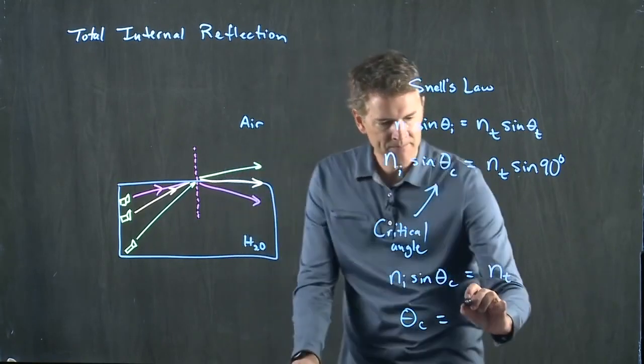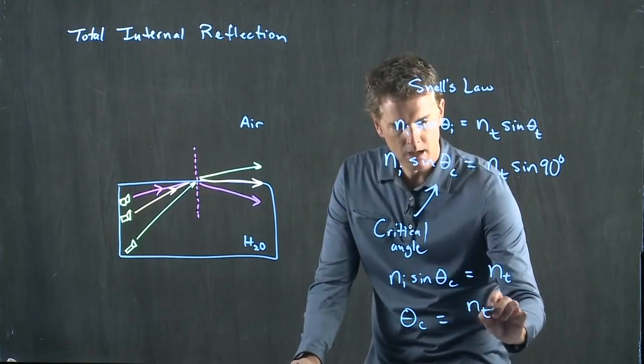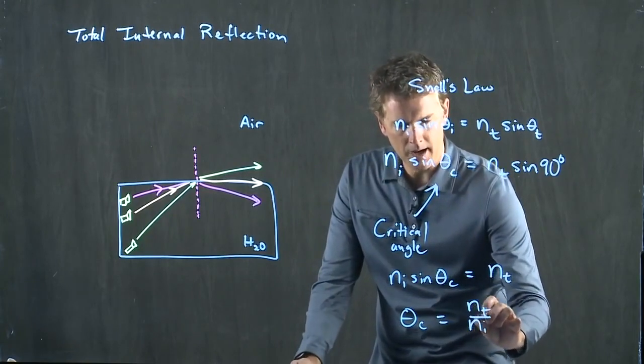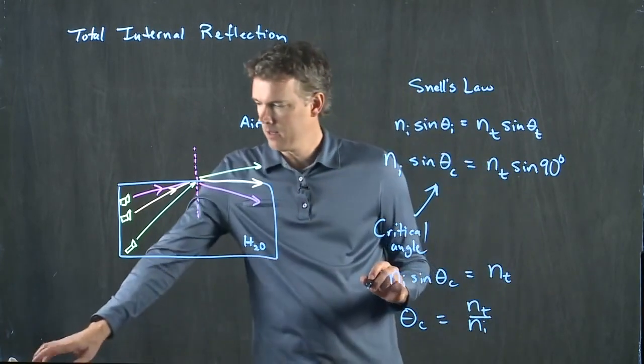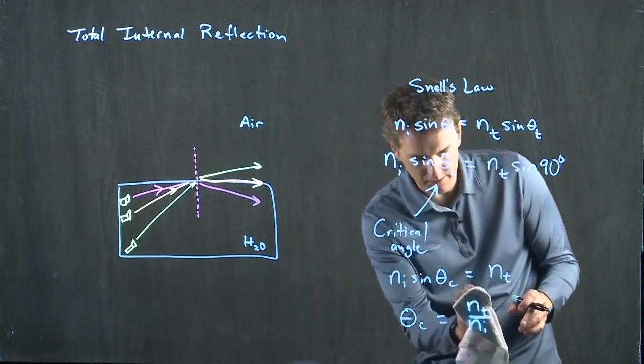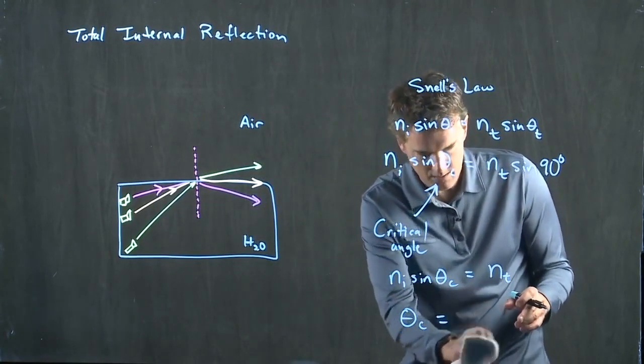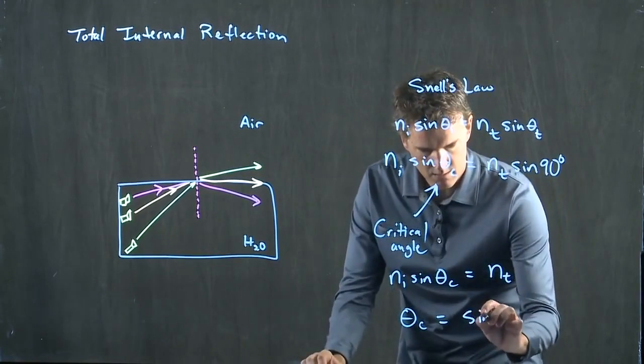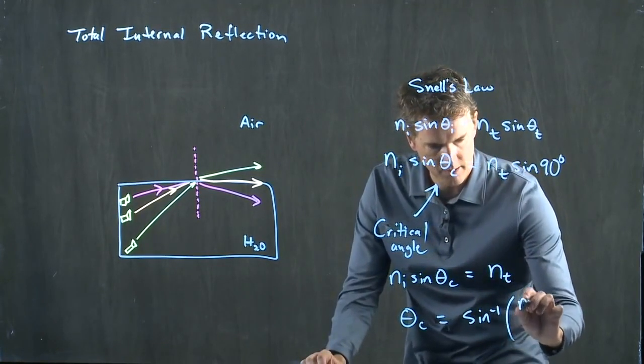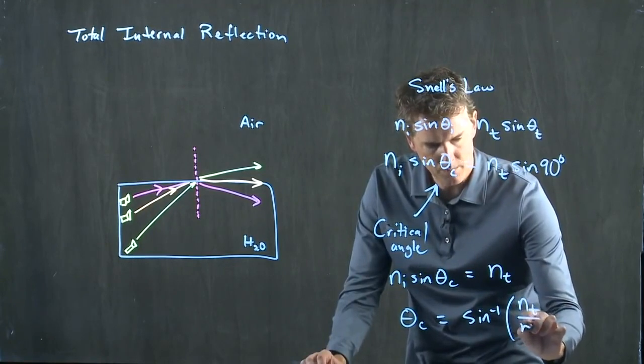And now you can identify what this critical angle is. Theta c is equal to nt over n i, and then I better move that over because we've got to write the arc sine in there. The arc sine of nt over n i.